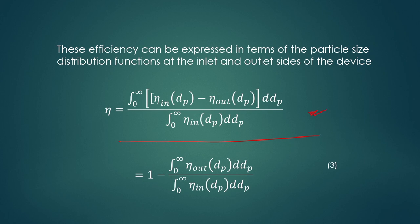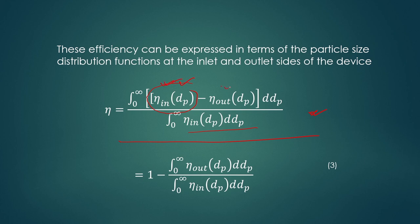This efficiency is defined as the integral from 0 to infinity of [eta_in(dp) minus eta_out(dp)] d(dp), divided by the integral from 0 to infinity of n_i(dp) d(dp). This simplifies to: 1 minus the integral from 0 to infinity of eta_out(dp) d(dp) divided by the integral from 0 to infinity of eta_in(dp) d(dp). From equation 3, you can calculate the efficiency of devices based on particle size distribution.